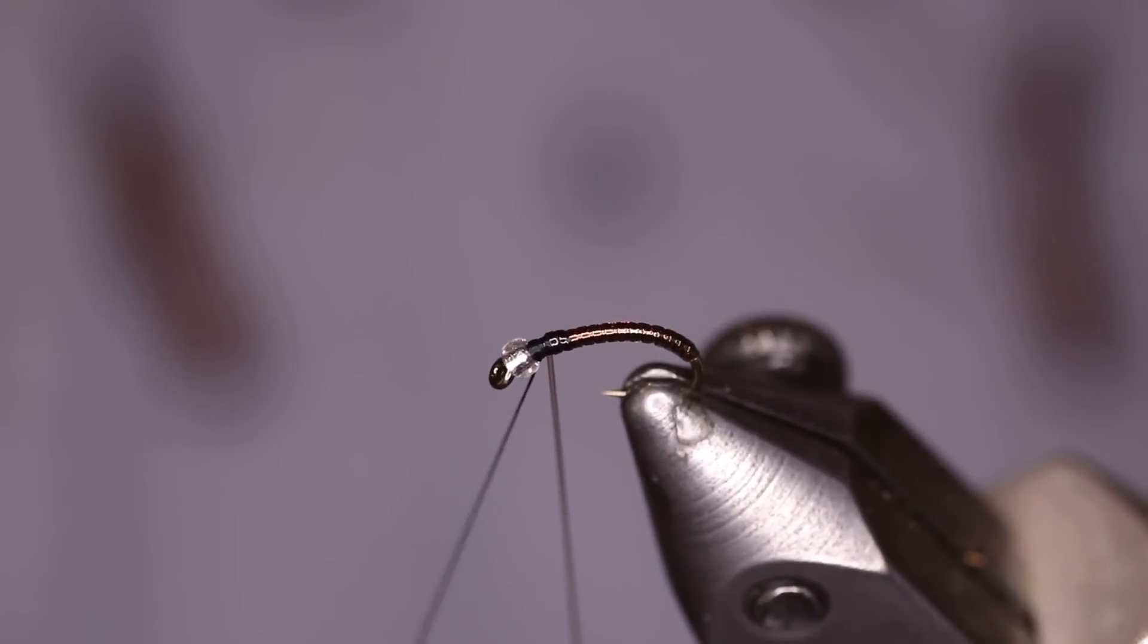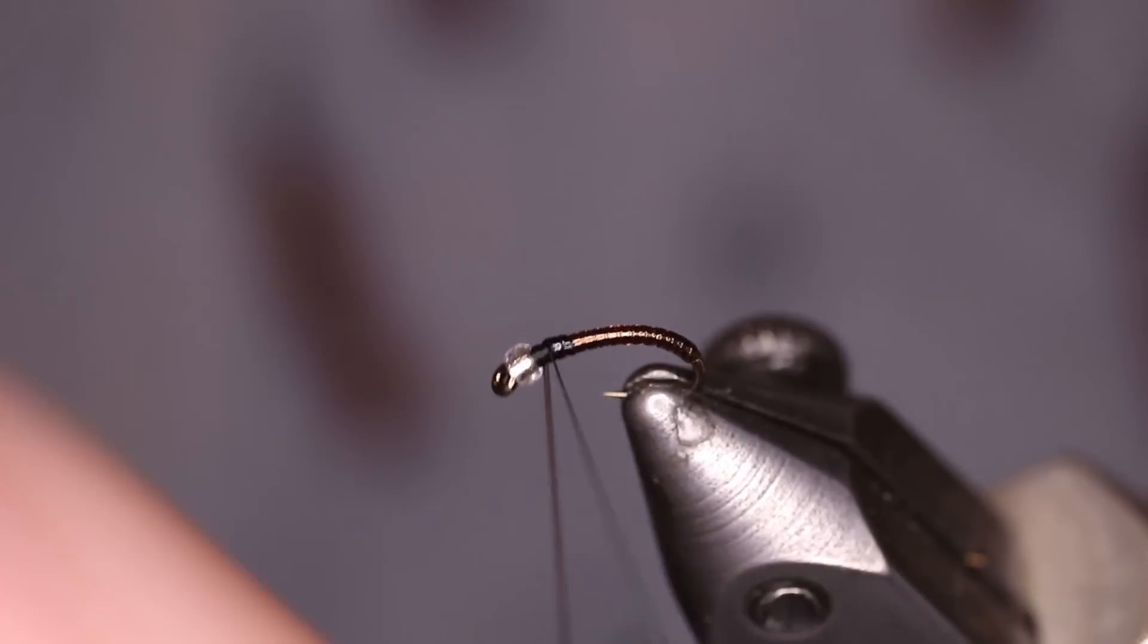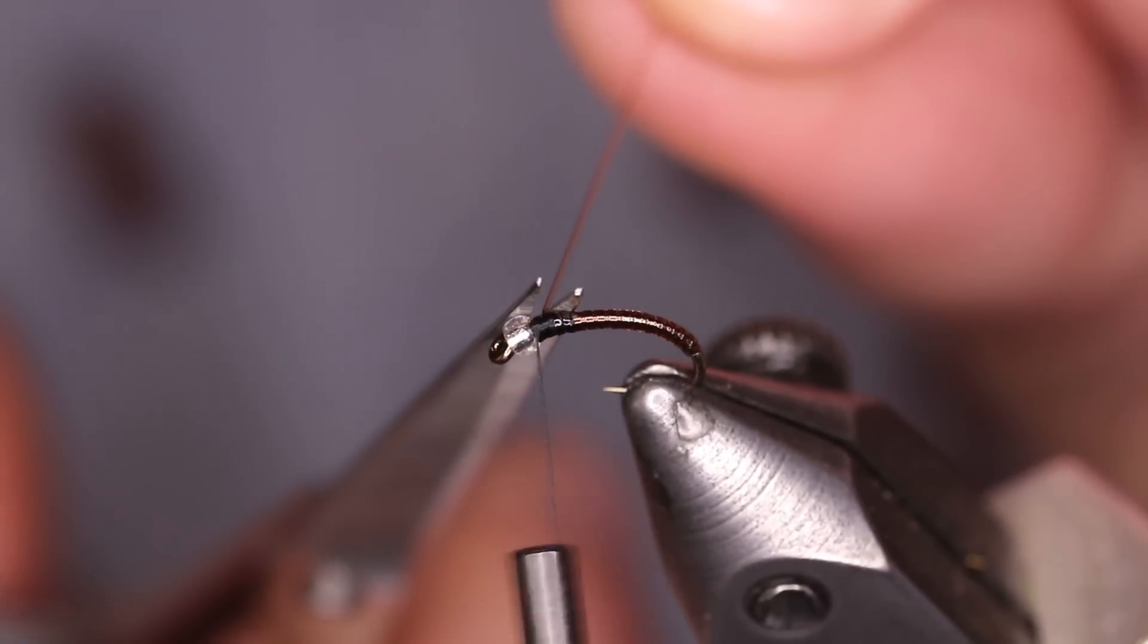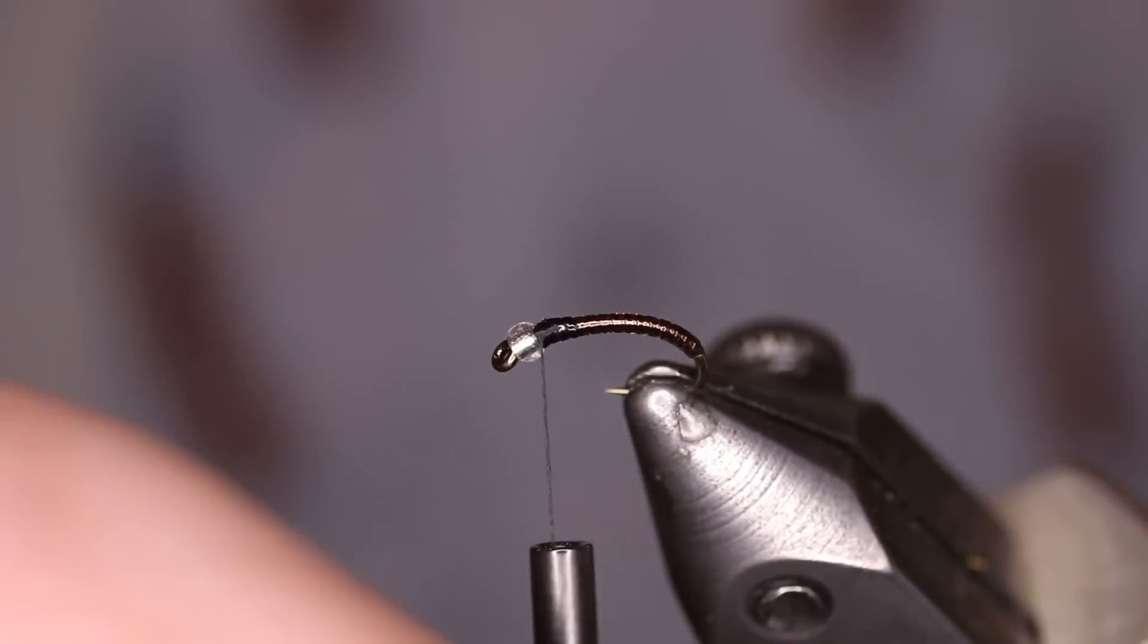Once we get the micro tubing back to the bead, we're going to go ahead and capture it with a couple turns of thread. And I always trim the micro tubing off really tight to the thread because it sucks that tag end up underneath, which produces a really clean looking fly.